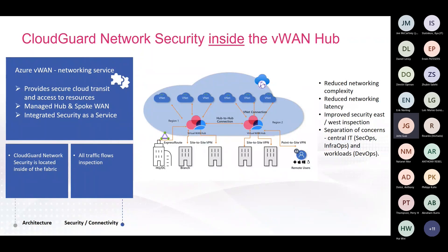Traditionally, when VWAN was first launched a few years ago, Checkpoint was actually a launch partner for Azure Virtual WAN. Our solution at the time, called Harmony Connect, protected users accessing the Internet — that solution was egress only. A lot of our customers asked when we'd have the ability to provide East-West protection, meaning protecting users from VNet-to-VNet connectivity and protecting branch offices and data centers. So what we're introducing today is our ability to protect East-West traffic: VNet to VNet, VNet to branch, and branch to other hubs across different regions or within the same region.